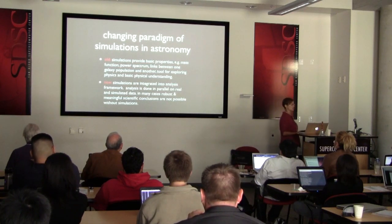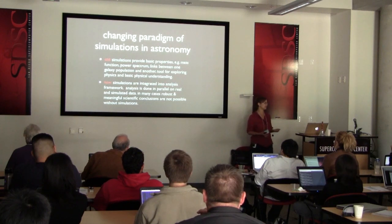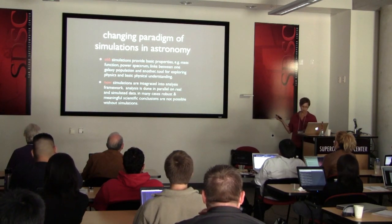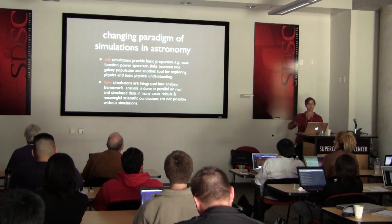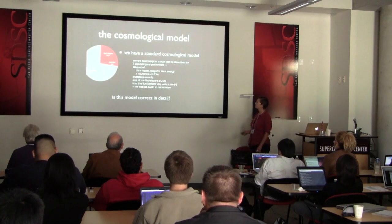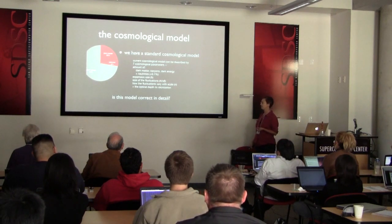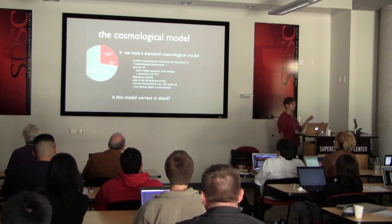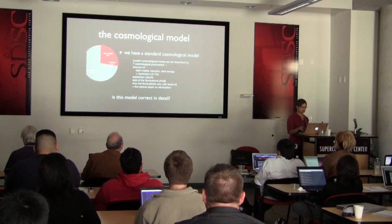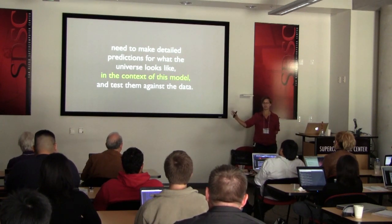This was motivated by producing images in the Millennium Observatory and similar work. In many cases we just aren't able to get robust scientific conclusions at the level we're interested in without simulations. The basic goals: we now have a standard cosmological model that can be described by just seven numbers, but there's lots of gory astrophysics turning those numbers into what we see today. We'd like to know if this model is correct in detail, and to do that we need very detailed predictions of what the universe looks like in this model and any alternative model.